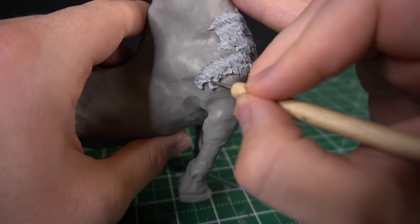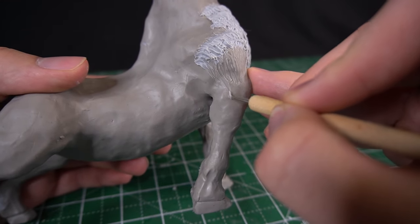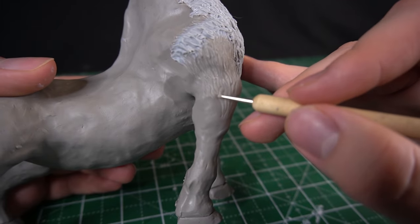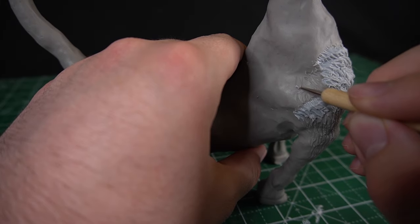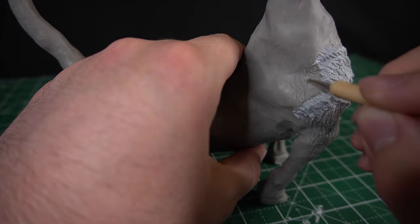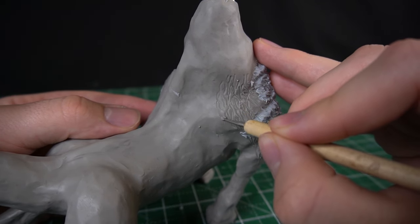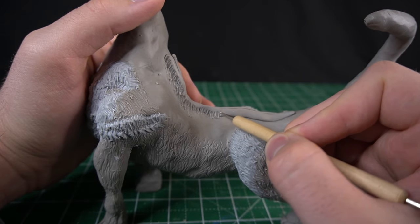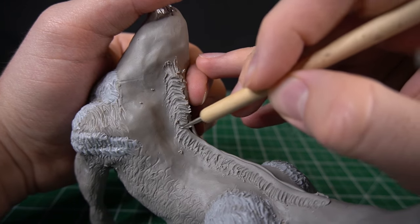For the rest of the fur texture, I use a small ball stylus and do a squiggly motion all over to give the illusion of fur. For the ridge of fur across the spine, I blend downward into the body. I begin tearing at the top of the fur to give it an uneven, furry texture.